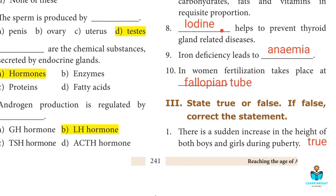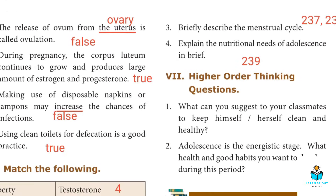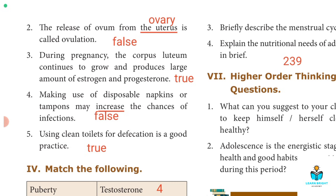Third section: True or False. First question: There is a sudden increase in the height of both boys and girls during puberty. True. Second: The release of the ovum from the uterus is called ovulation. This is false — the release of the ovum from the ovary is called ovulation.